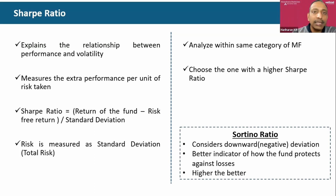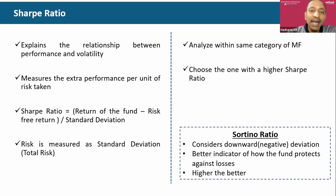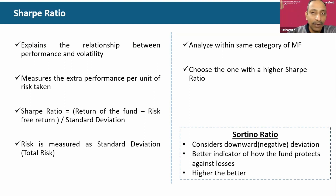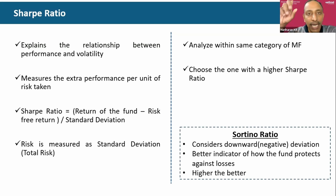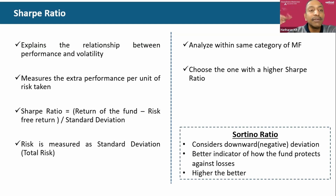Within the same category, compare the funds and select the fund with a higher Sharpe Ratio. I don't mind taking a higher risk as long as I'm getting rewarded for it. For example, if it's a mid-cap fund category, compare only mid-cap funds and select the one that has delivered a higher Sharpe Ratio.